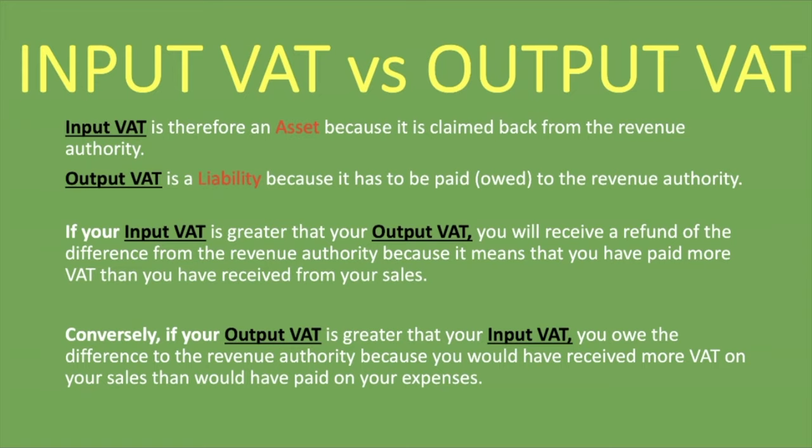If your output VAT is greater, that means you collected more VAT than you actually paid out. The difference — your output VAT compared to your input VAT — is what you pay to the revenue authority. For example, if your output VAT is R50,000 and your input VAT is R40,000, then the R10,000 difference is what is paid over to the revenue authority.